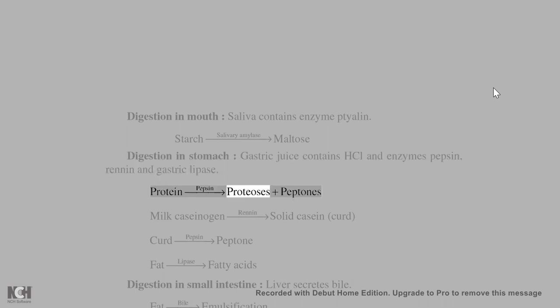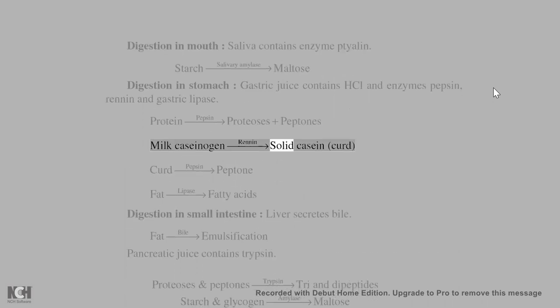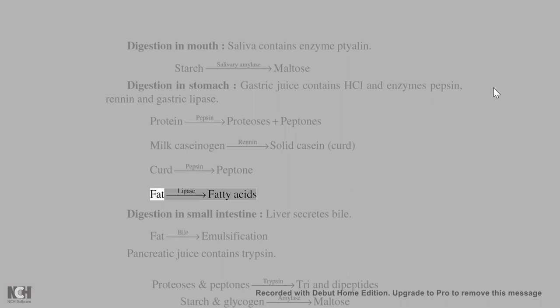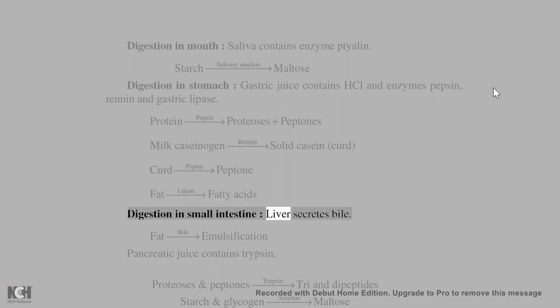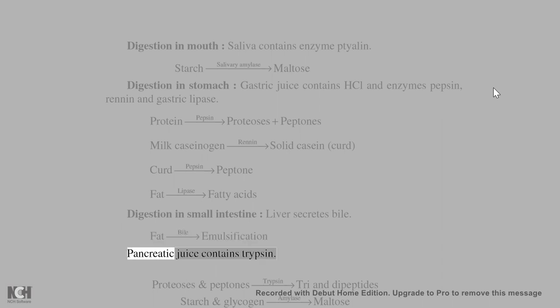In the stomach: pepsin acts on proteins to produce proteoses and peptones; rennin converts milk caseinogen into solid casein (curd); gastric lipase acts on fats to produce fatty acids. Digestion in the small intestine: liver secretes bile for fat emulsification.